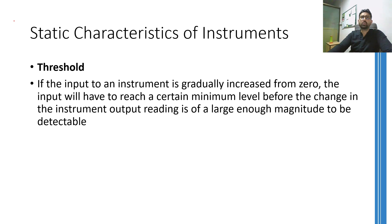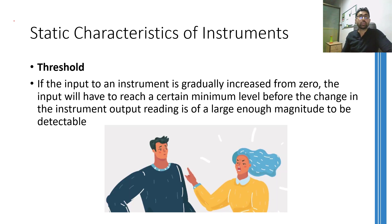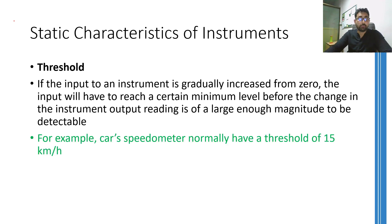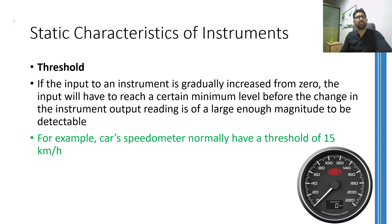The next static characteristic is threshold. Threshold means a defining point between two states. For instruments, you need to apply a certain magnitude of input before it starts showing any output. For example, the pointer of a speedometer doesn't move if you are driving at a very low speed — it abruptly moves to 10 or 15 km/h once you have achieved that much speed. So the threshold for a speedometer is around 10 to 15 km/h, meaning you have to apply this much speed before the speedometer starts giving output.